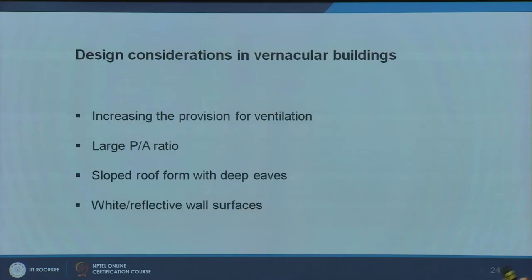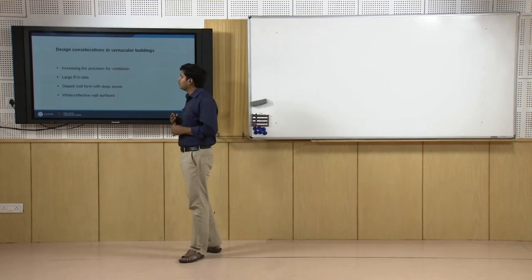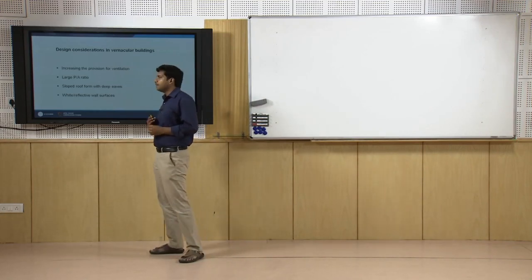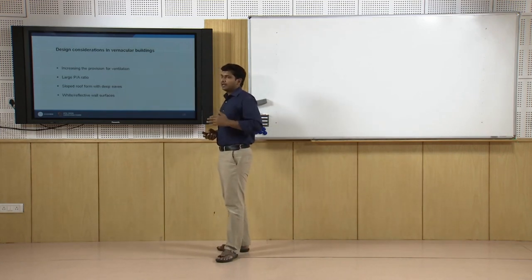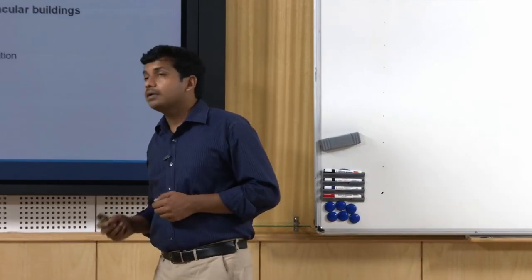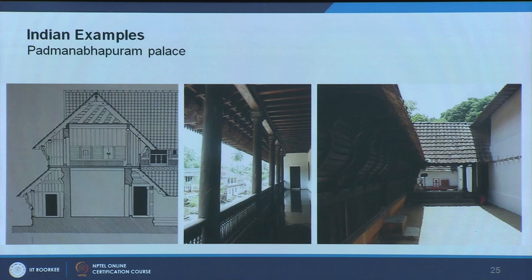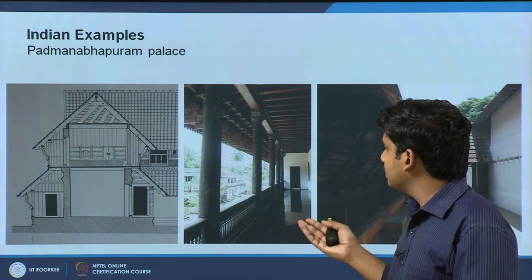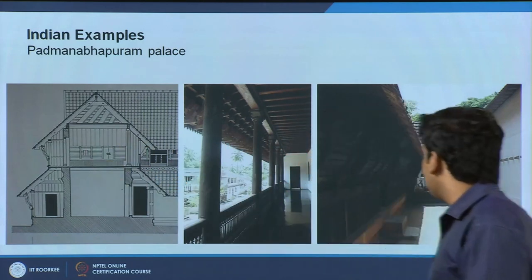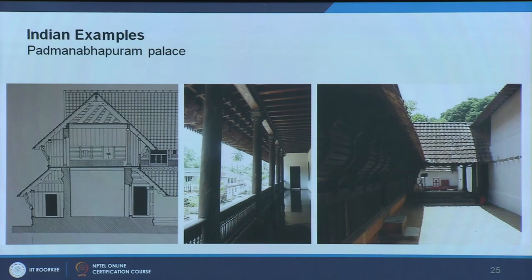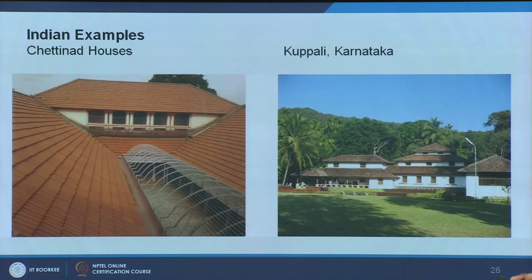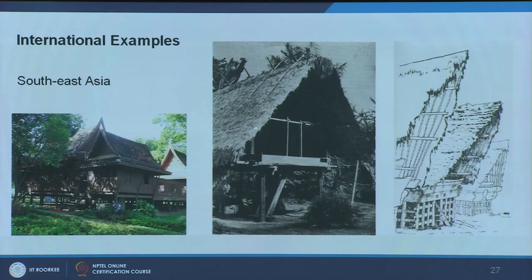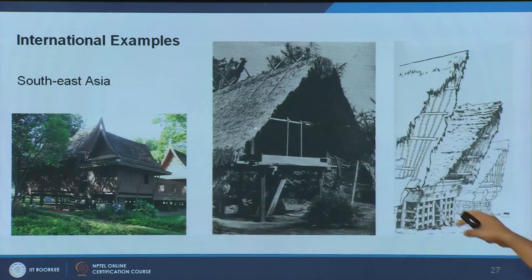Sloped roofs are preferred because coastal areas typically have high precipitation. Wide, reflective wall surfaces are also preferred since solar radiation intensity is quite high during summer. Classic Indian examples include vernacular buildings with louvres, nicely shaded balconies, improved ventilation patterns, white reflective surfaces, courtyards, and loosely spread-out plans with high perimeter-to-area ratio. International examples from Southeast Asia show more or less resembling roof forms and planning. Ventilation is given primary importance apart from the roof form.